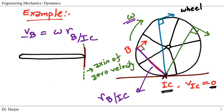If we take the side view of the wheel, this is the center of the wheel—it is rotating and the ground is touching here. The axis of zero velocity is perpendicular from the point of IC.